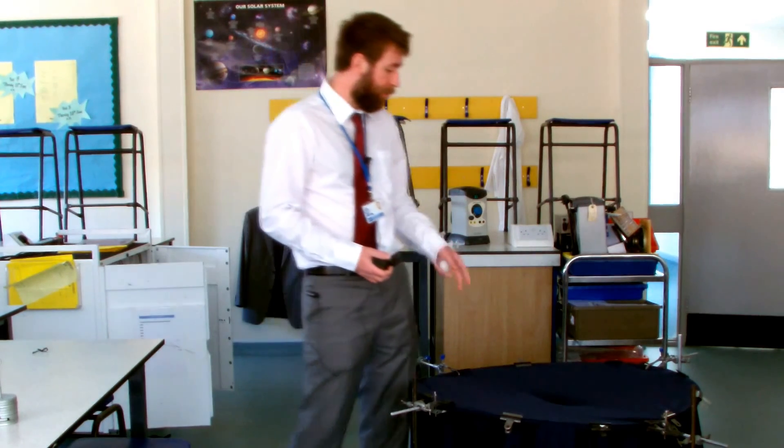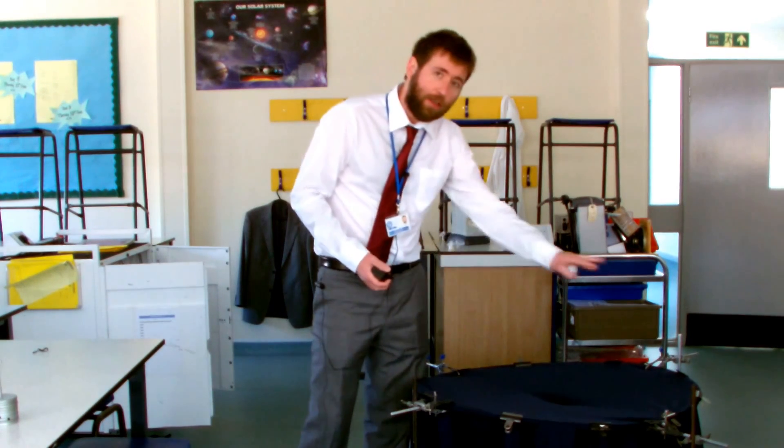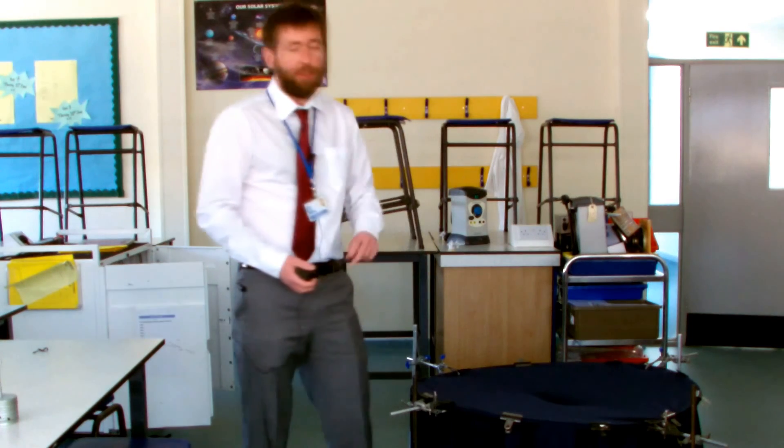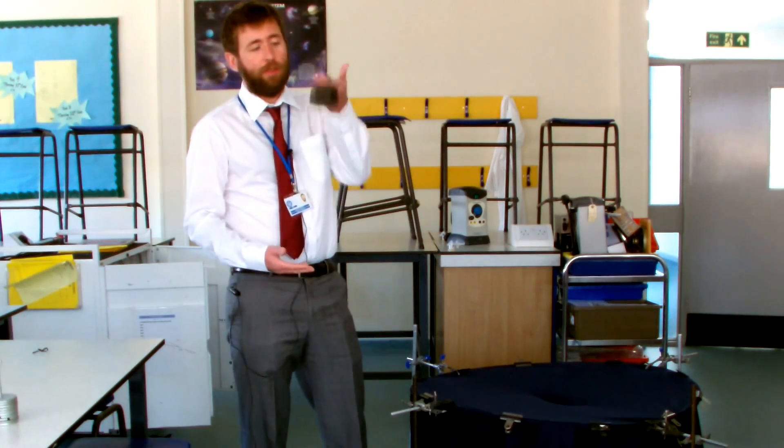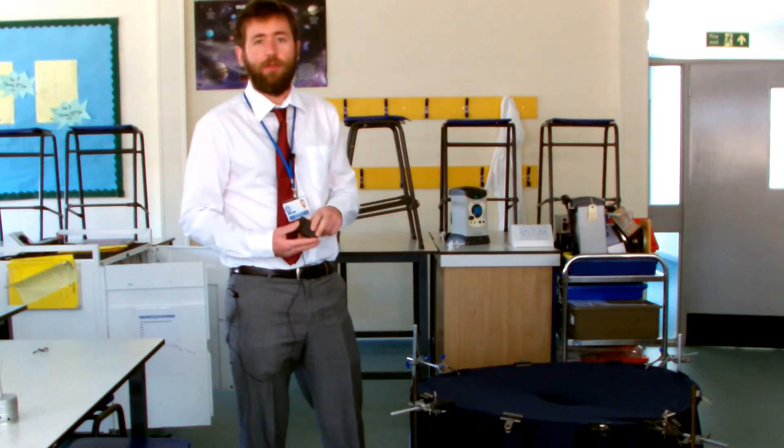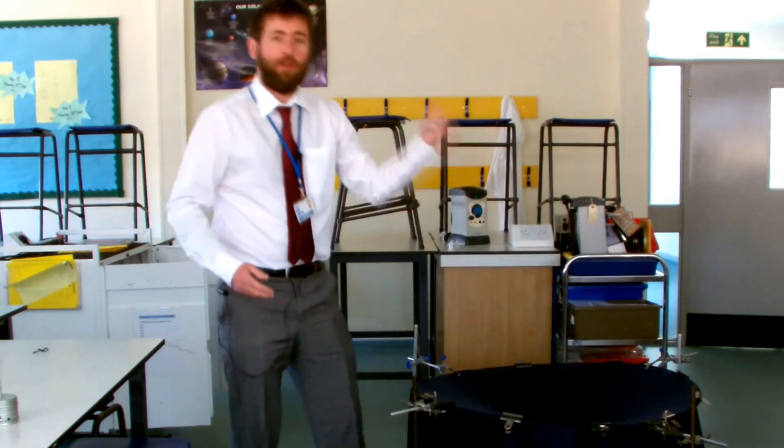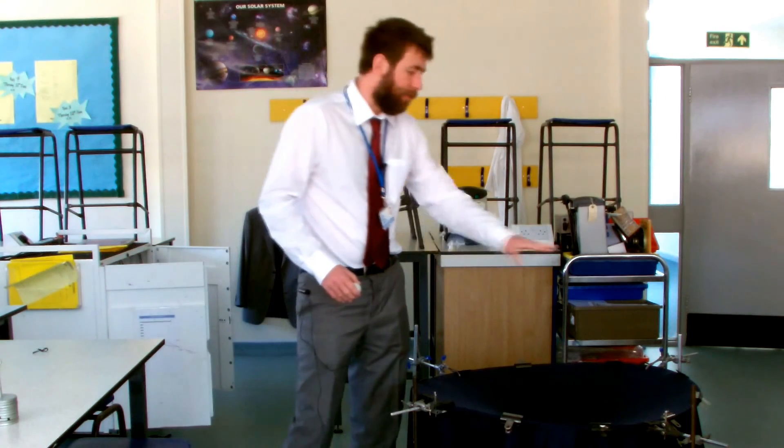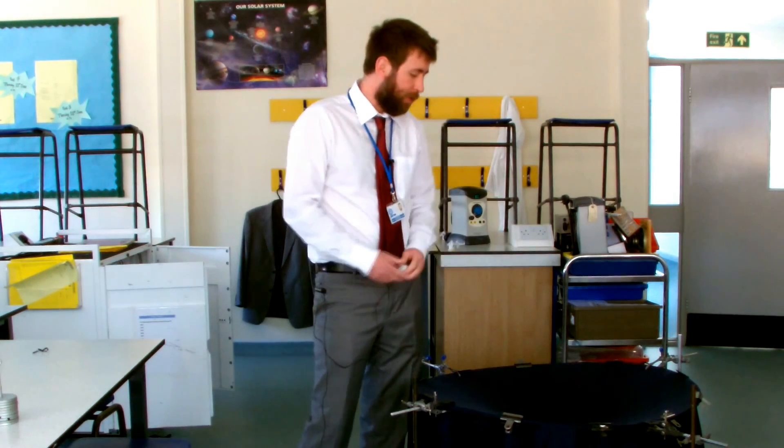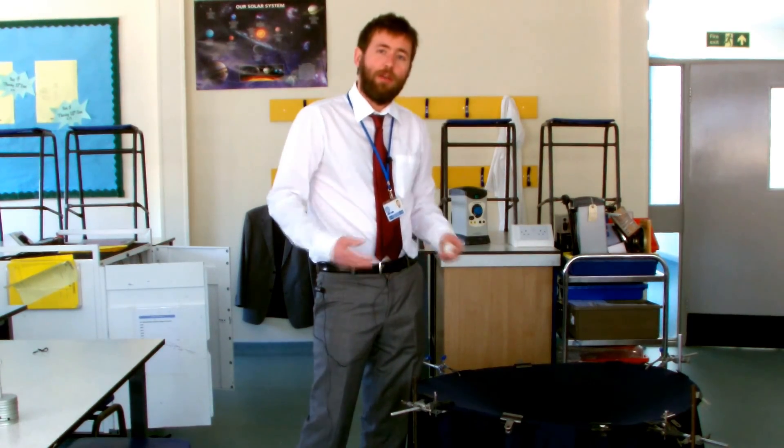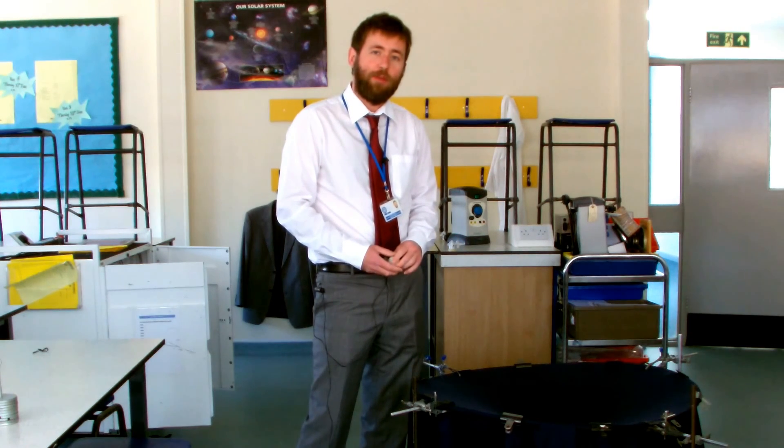We're going to do some modelling of gravity using this model here. This is a Lycra sheet which is stretched over a hula hoop. And we're going to use this mass to represent the sun. When I put the sun into our model, the Lycra stretches. And that is like our plane of gravity. The closer you are to that mass, the more force you're going to experience from gravity.